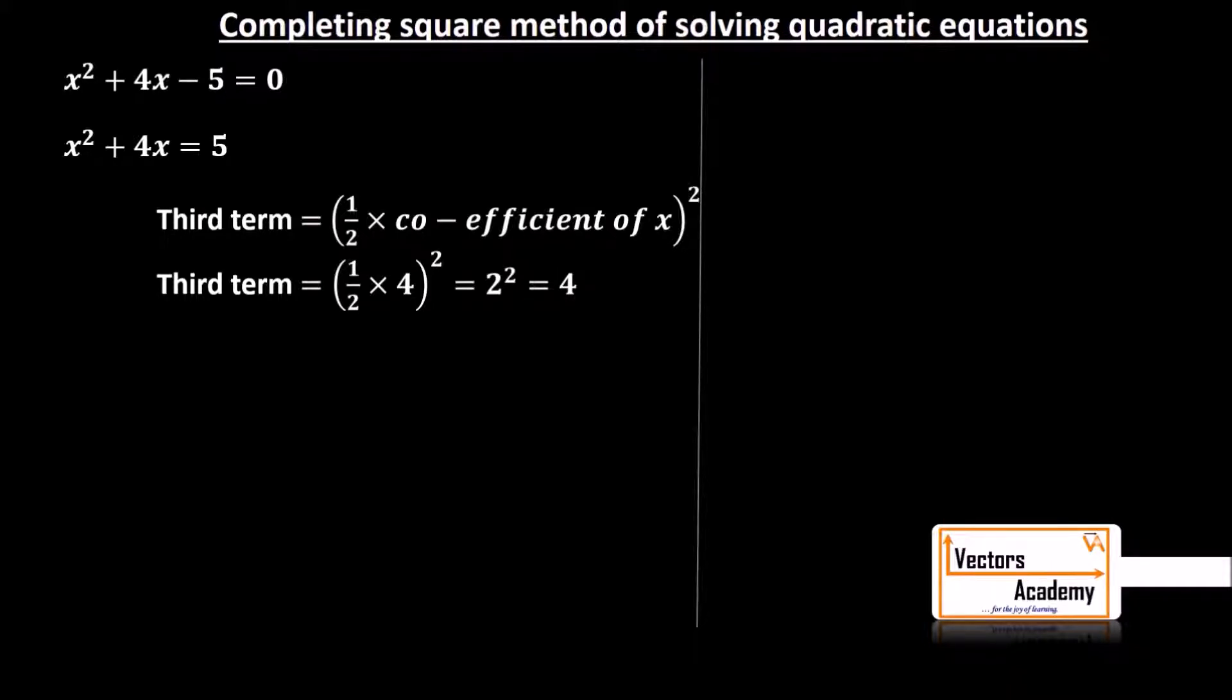Now once you have found the third term, we have to add this third term on both sides of the equation. So the equation becomes x² + 4x + 4 = 5 + 4. So I have added 4 to both sides of the equation.